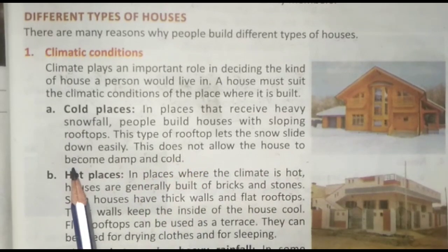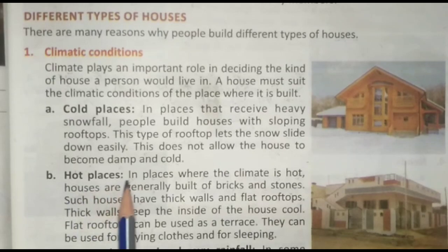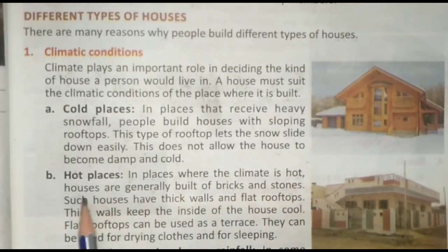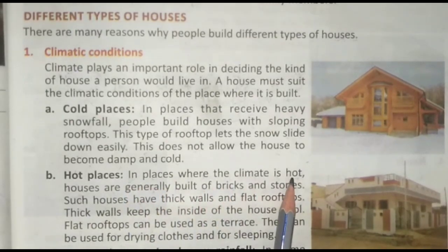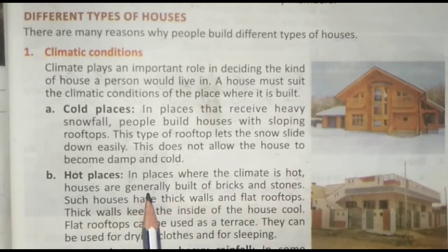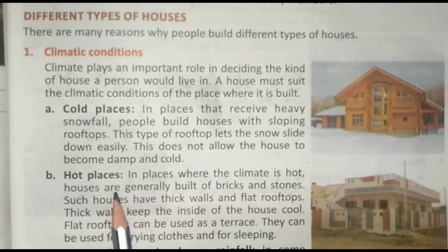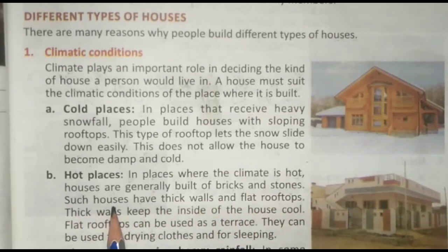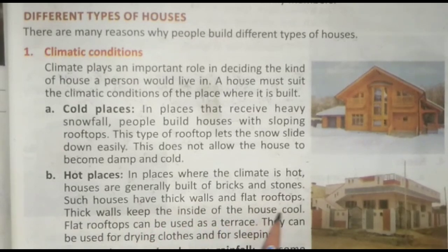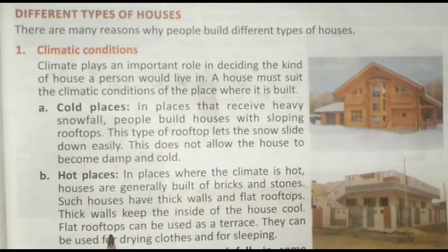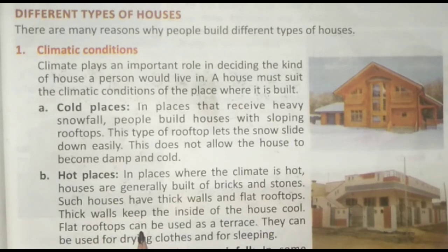This does not allow the house to become damp and cold — इससे घर सीलन और ठंडा नहीं होता है। Hot places — गर्म स्थान। In places where the climate is hot, houses are generally built of bricks and stones. ऐसे घरों में मोटी दीवारें और सपाट छतें होती हैं। Thick walls keep the inside of the house cool — मोटी दीवारें घर के अंदर को ठंडा रखती हैं।